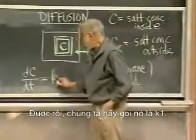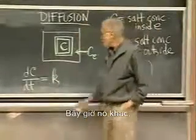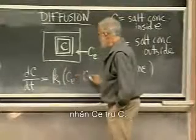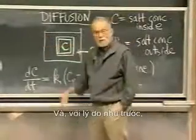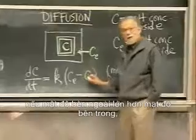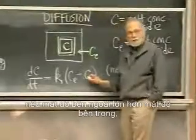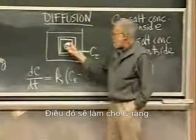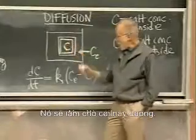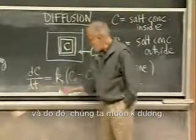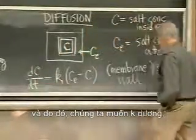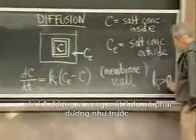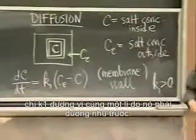Let's keep calling it K1. Now it's different: times CE minus C. And for the same reason as before, if the external concentration is bigger than the internal concentration, we expect salt to flow in. That will make C rise, it will make this positive, and therefore we want K1 to be positive — for the same reason it had to be positive before.